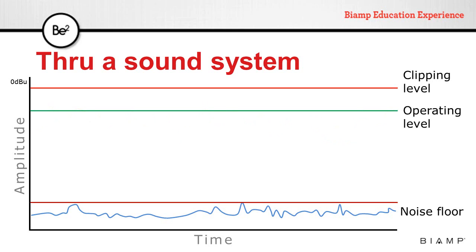It's important to note that an individual sound system component may specify the noise floor or the signal-to-noise ratio. If they specify the signal-to-noise ratio, it is usually referenced to the nominal output level. In other words, it's the difference between the operating level and the component's self-noise level.